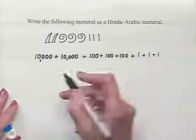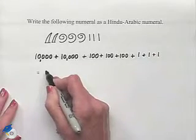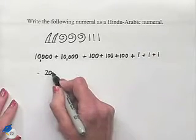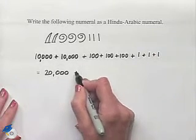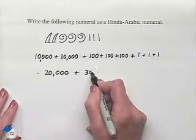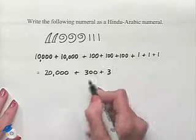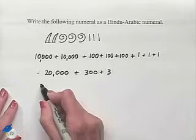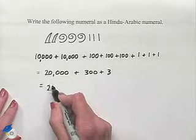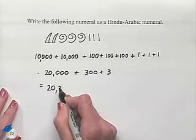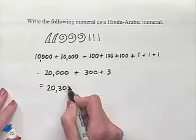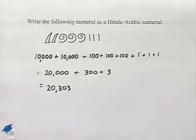That gives us twenty thousand plus three hundred plus three, which is twenty thousand three hundred three as a Hindu-Arabic numeral.